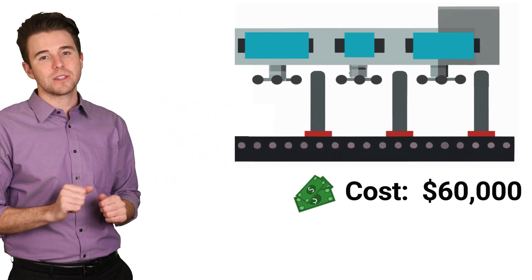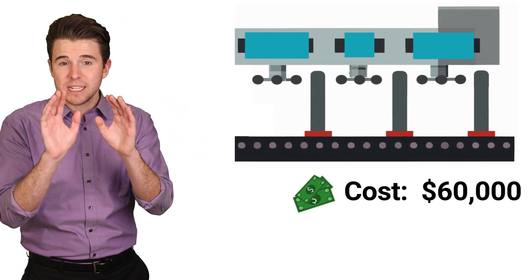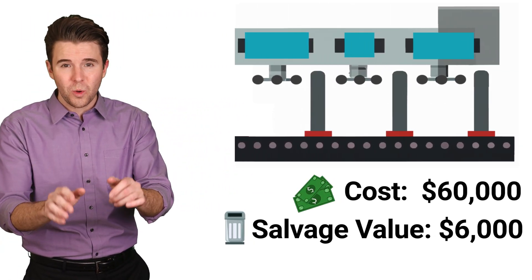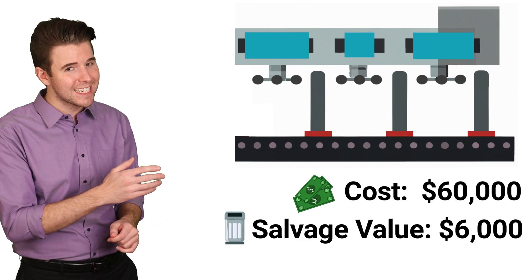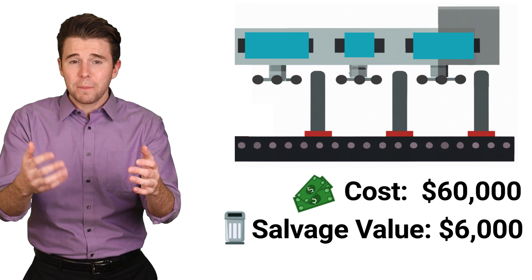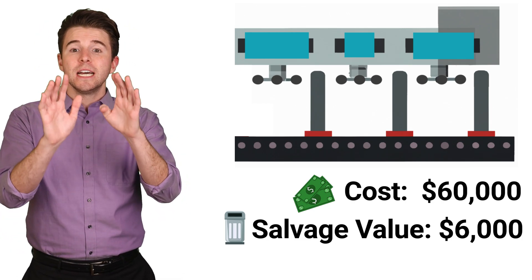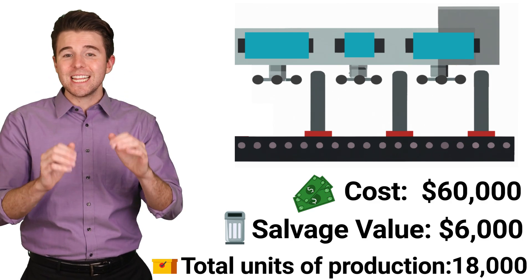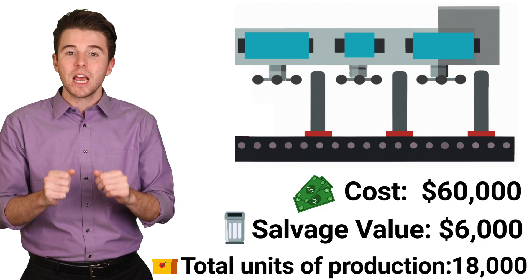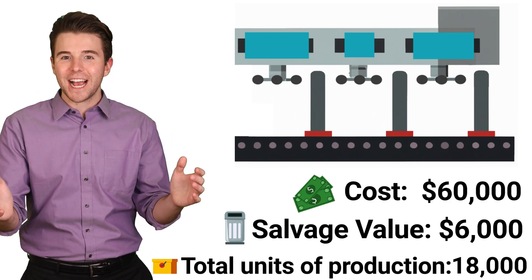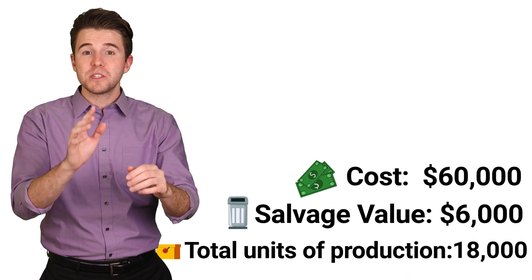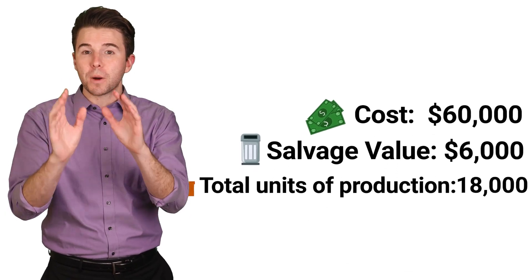Let's do an example. Assume a company purchased a machine for $60,000, and the estimated salvage value is $6,000. The company also estimates that the machine should produce 18,000 units during its entire useful life.